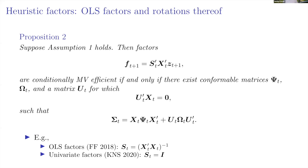Proposition 2 is our main result. It says that heuristic factors can still be mean-variance efficient if and only if a specific condition about the covariance matrix is satisfied. Intuitively, there must be a separation of risks in the covariance matrix into two parts: covariances driven by characteristics X, and covariances with other factors whose exposures must be orthogonal to X.